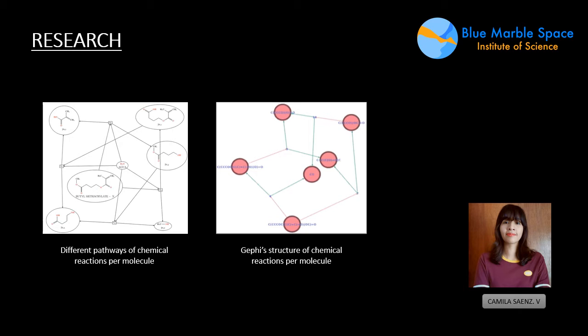As you can see here, different pathways of chemical reactions can be obtained by using MOD, and you can visualize the structure by using the Gephi software. It's important to know which molecules will persist and also which reactions could be autocatalytic, because this process might have guided the chemical evolution of the primitive atmosphere.